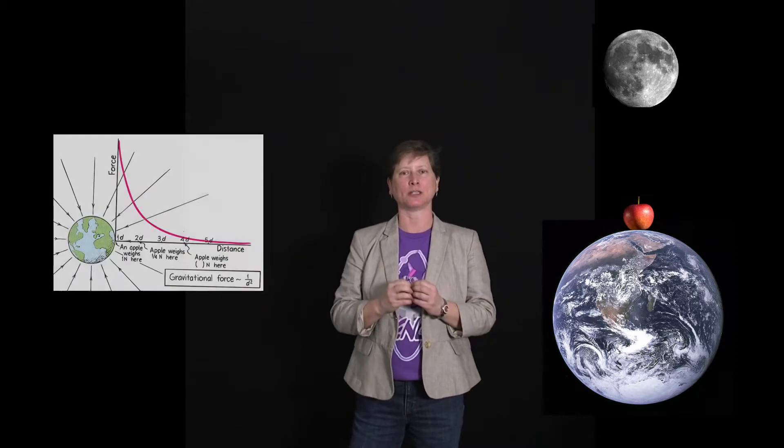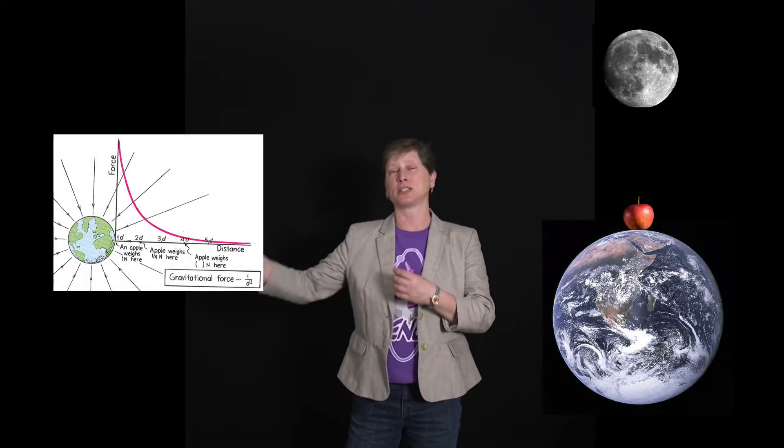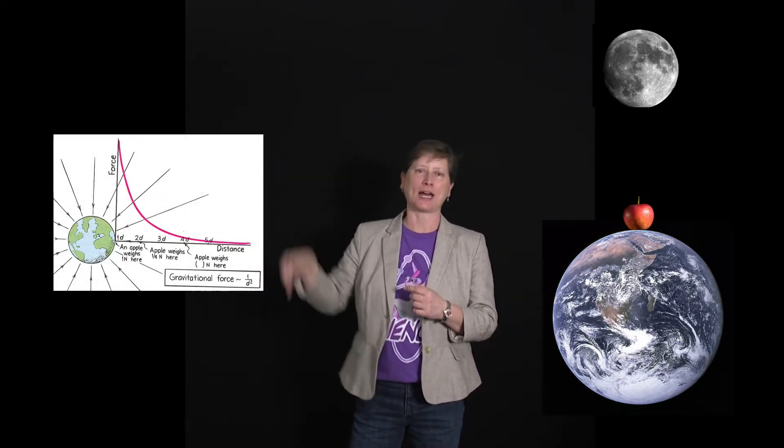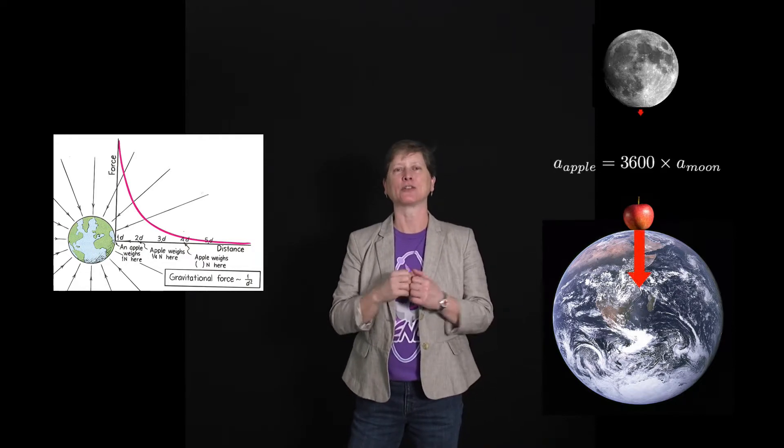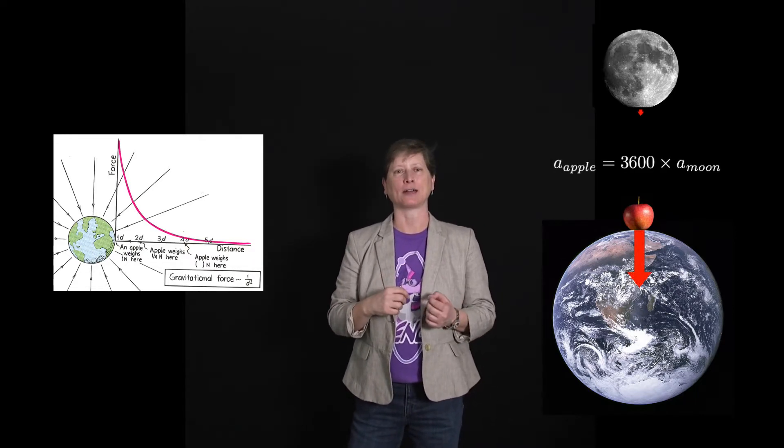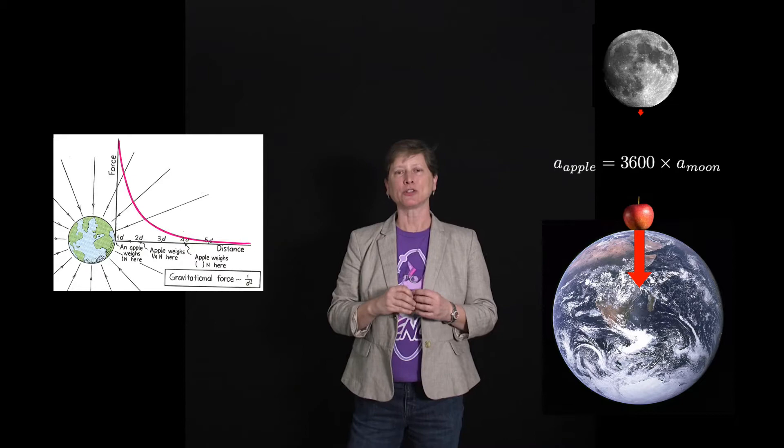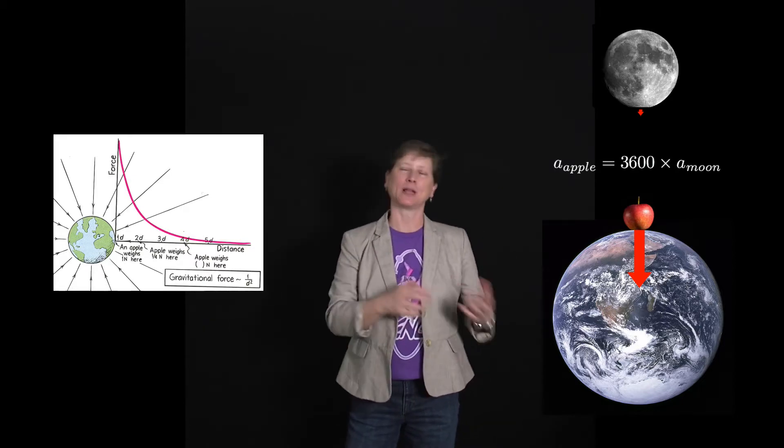So, we've seen that Earth interacts with things like an apple and the Moon. And that the acceleration resulting from that interaction is related to the square of the distance between them. The Moon, which is 60 times farther away than a falling apple, has an acceleration that's a 36 hundredth that of the falling apple. And we've also seen that the Sun interacts with the planets in a similar fashion. As you get farther away from the Sun, that acceleration diminishes as the square of the distance.